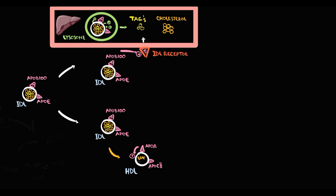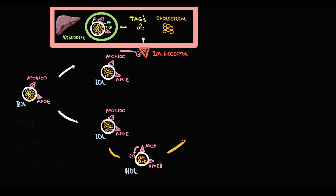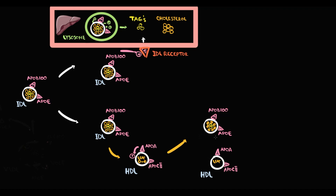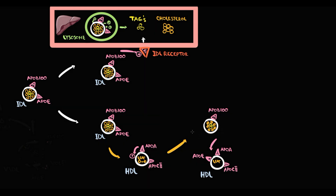Inside the HDL particle, LCAT binds a fatty acid to cholesterol, resulting in production of cholesterol esters. Then HDL gives back to IDL not free cholesterol, but cholesterol esters. Once cholesterol esters fill the IDL particle, IDL loses ApoE, which returns to HDL. So now this particle has only ApoB100 on its surface, and such a particle with a lot of cholesterol esters inside and ApoB100 on its surface we call low-density lipoprotein, or LDL.